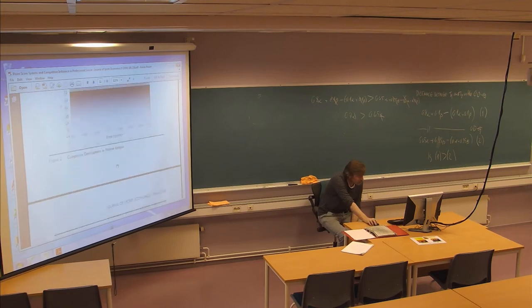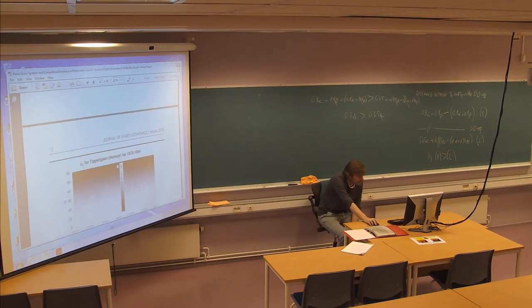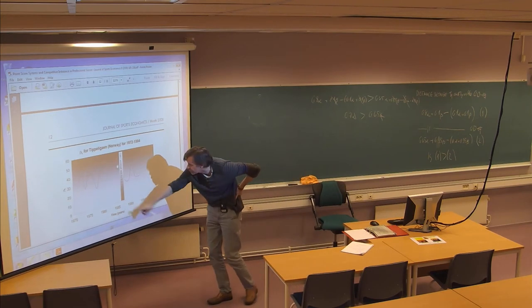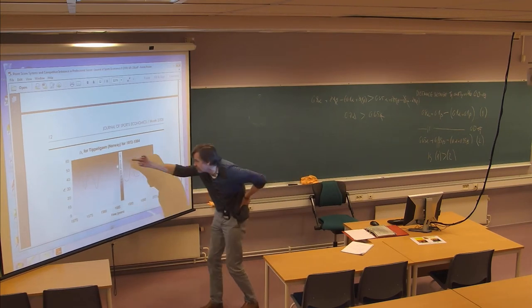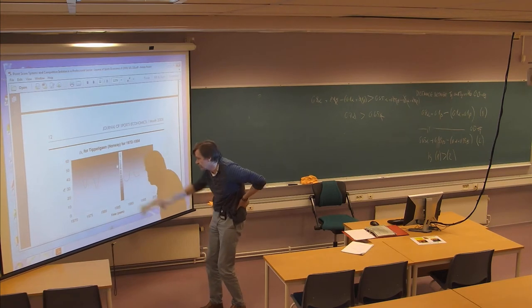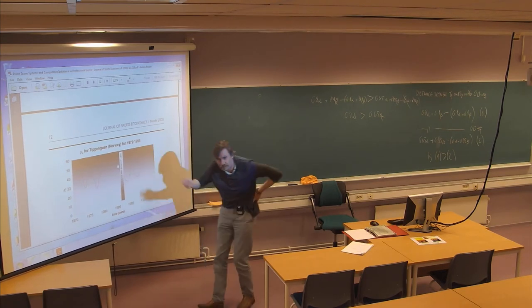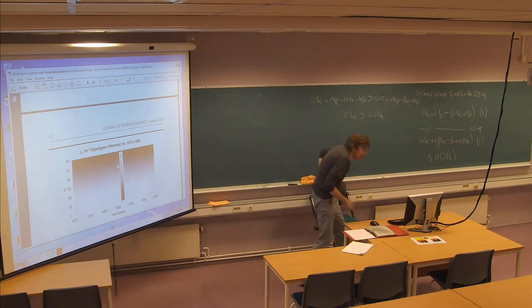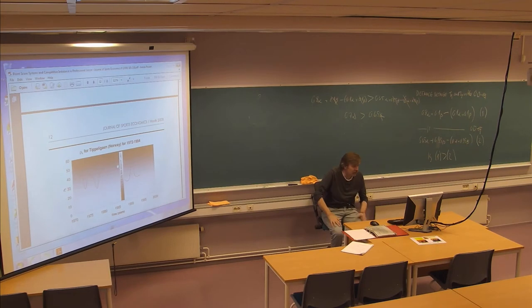If you look at other leagues, here is Norway, and you see Norway was later to adopt the 3-1-0 system than Premier League. This was in 86, I think. There was a medium season in 87 here, where there was a 3-2-1-0 system, like they have in the ice hockey now, which was a bad mistake, due to the fact that everybody played more defensively in that system.